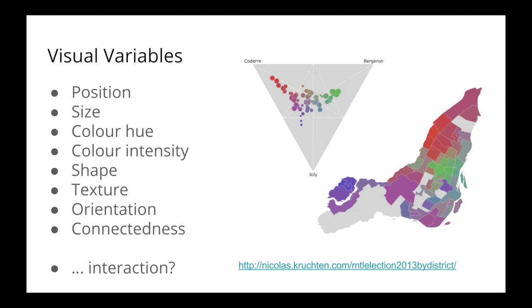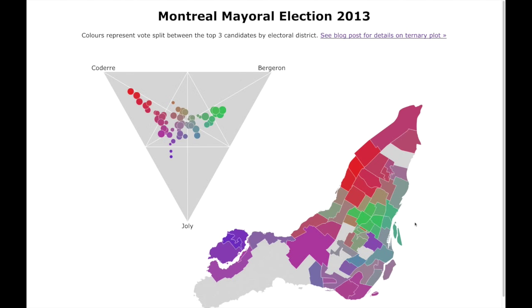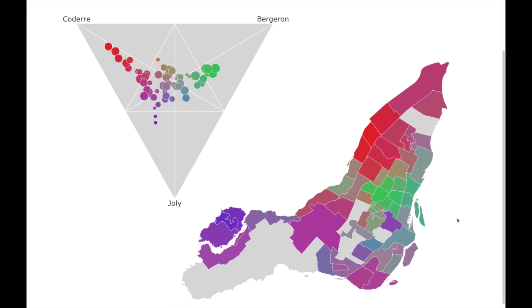Data visualization is the process of mapping elements of data — say you have a spreadsheet with a bunch of columns — to visual variables. You're saying this column I'm going to link to the position of a dot on my graph, or to the orientation of a line in my graphic. To illustrate this, I'm going to show you a little piece of work I did after the last municipal election here in Montreal. This is built using D3.